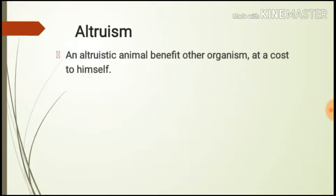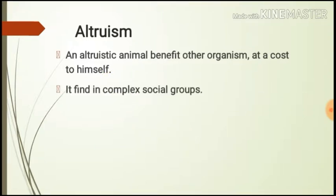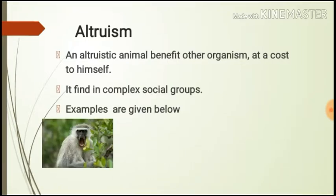An organism is said to behave altruistically when its behavior benefits other organisms at a cost to itself. Altruistic behavior is common throughout complex social structures. For example, vervet monkeys give alarm calls to warn fellow monkeys about the presence of predators, even though in doing so they attract attention to themselves, increasing their personal chances of being attacked. By giving warnings to their fellow monkeys, they are acting altruistically.